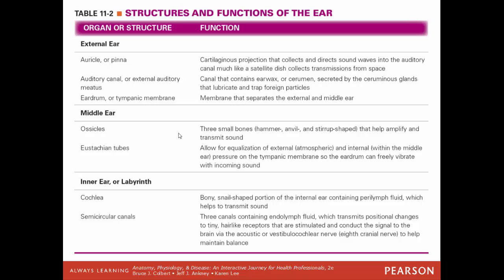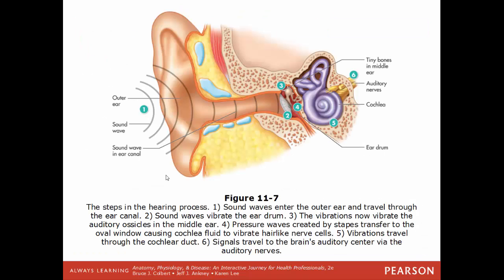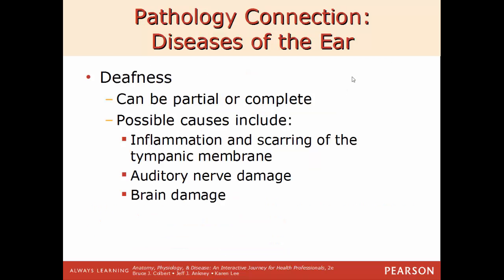Here is a summary of the structures and functions of the various parts of the ear — external, middle, and inner. The process of hearing: sound waves enter the outer ear and travel through the auditory canal; they hit the eardrum; they vibrate the auditory ossicles in the middle ear; the vibration of the ossicles creates pressure waves inside the oval window, causing fluid in the cochlea to impact the hair-like nerve cells; vibrations travel through the cochlear duct; and the signal is interpreted through the auditory nerves.